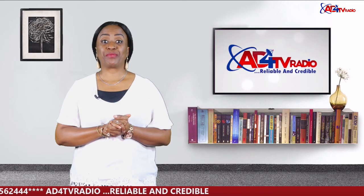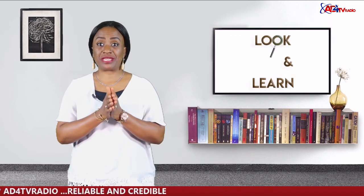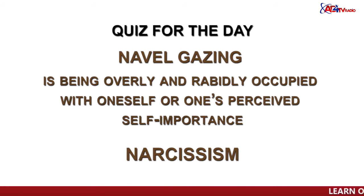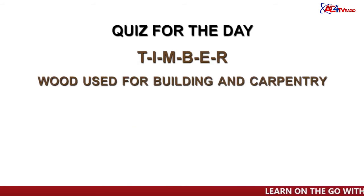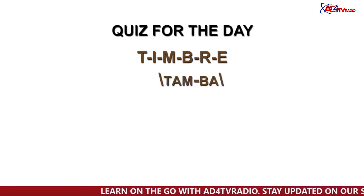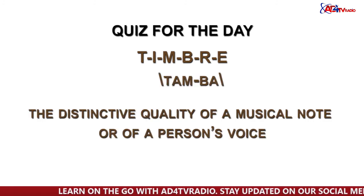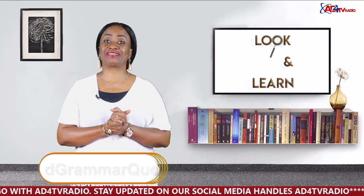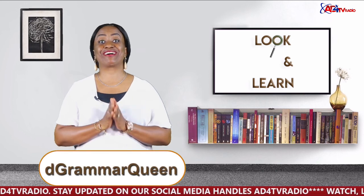That's all for today. Before we go, let's address the quiz questions. Navel-gazing is being overly and rabidly occupied with oneself or one's perceived self-importance. Another word or synonym for navel-gazing is narcissism. T-I-M-B-E-R is wood used for building or carpentry and is pronounced timber, while T-I-M-B-R-E is pronounced timbre and means the distinctive quality of a musical note or of a person's voice. I'll see you in the next episode. Till then, keep at it, speak right, and write right. Bye.